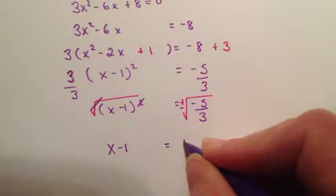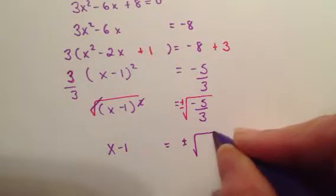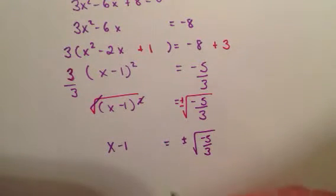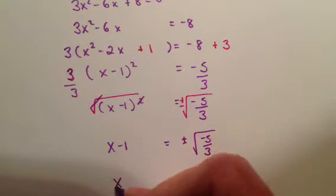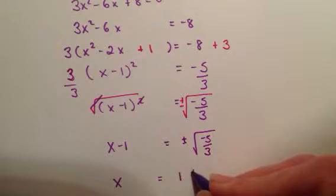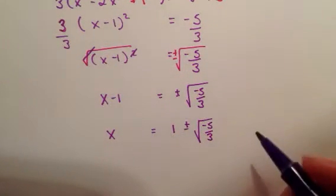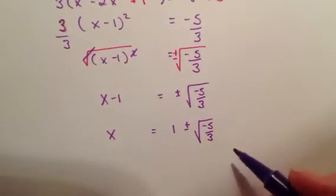On this side, I have square root of negative 5 thirds. Now I'm going to add 1 to both sides. I like to add it in the front. So it's going to be 1 plus or minus the square root of negative 5 thirds. And all we have left to do is clean this up a little bit. This is a little ugly.